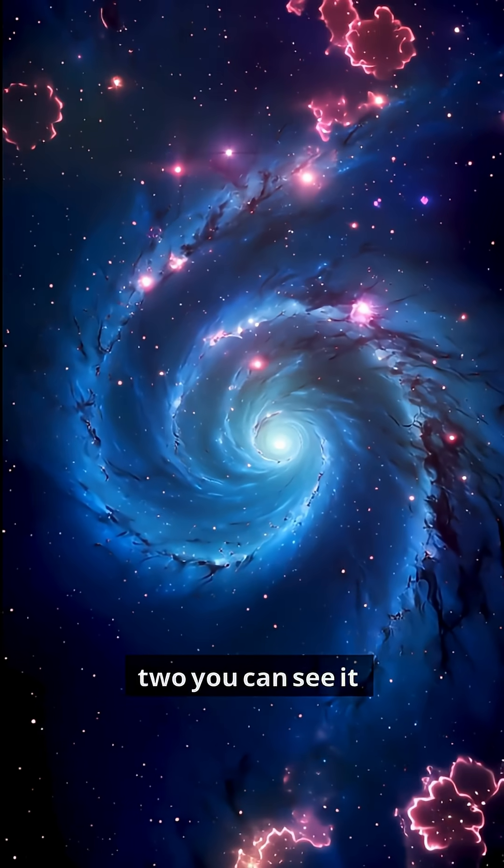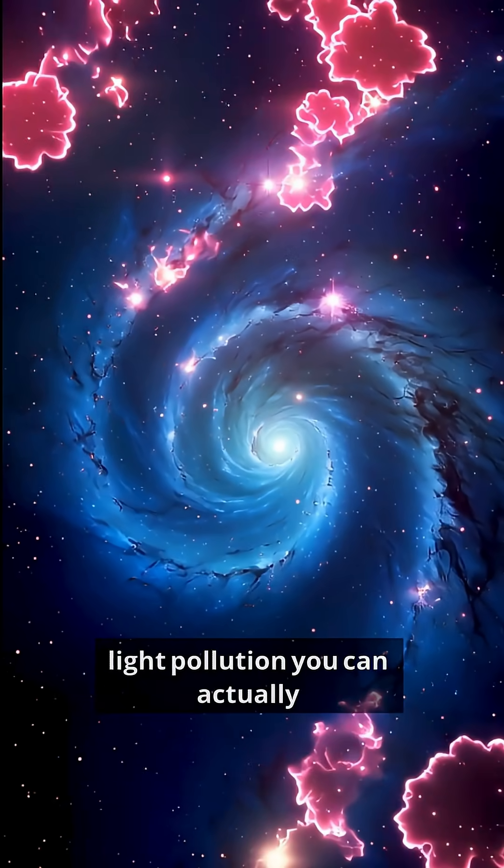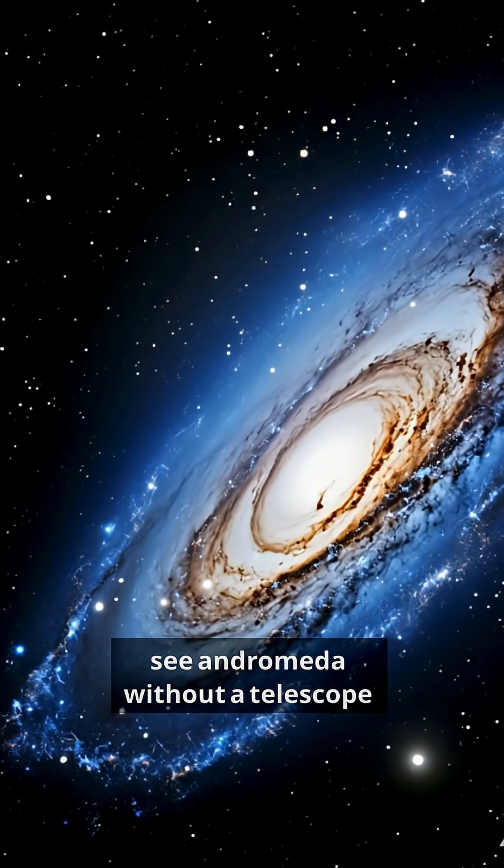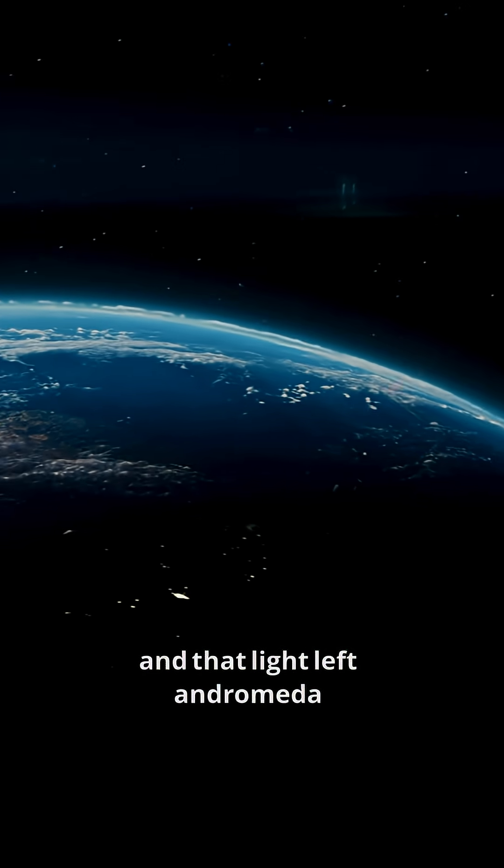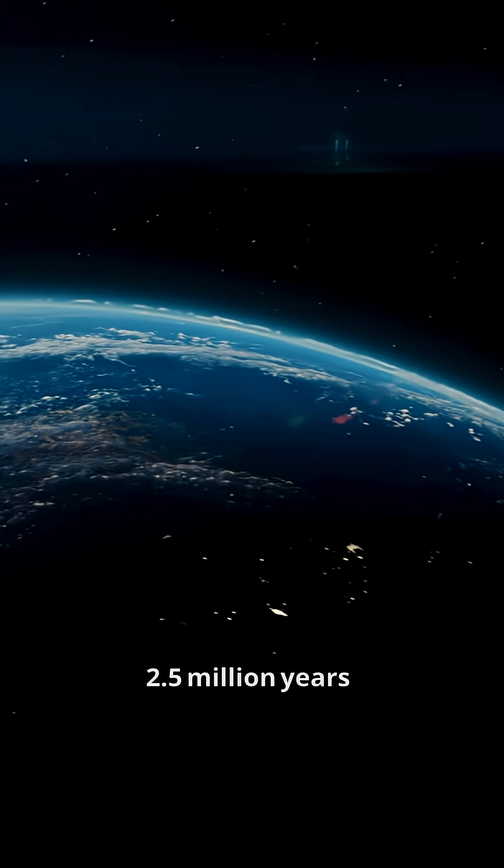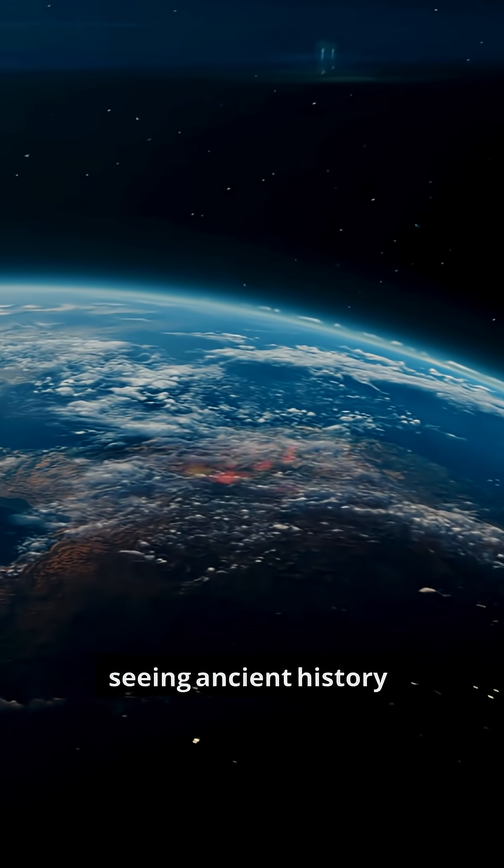Fact number two, you can see it with the naked eye. If you go somewhere dark with no light pollution, you can actually see Andromeda without a telescope. It looks like a faint glowing blur in the sky. And that light left Andromeda 2.5 million years ago. So you're literally seeing ancient history with your eyes.